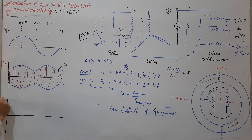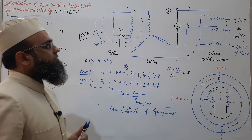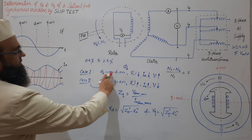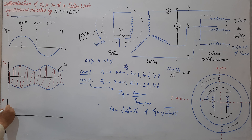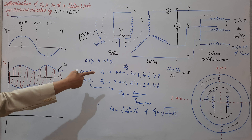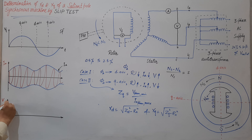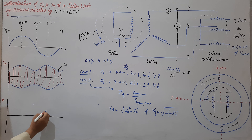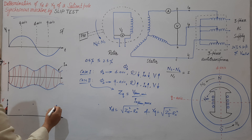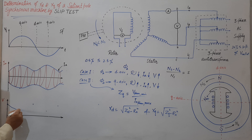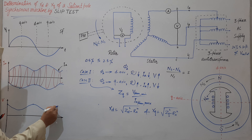If we want to draw the oscillogram for the armature voltage drop reading, then for the d-axis case V is maximum. So corresponding to d-axis we have V as maximum, corresponding to q-axis we have minimum, again d-axis maximum, q-axis minimum, and again d-axis maximum. So the envelope will be like this — taking the mirror image: maximum, then minimum, minimum, maximum like this.